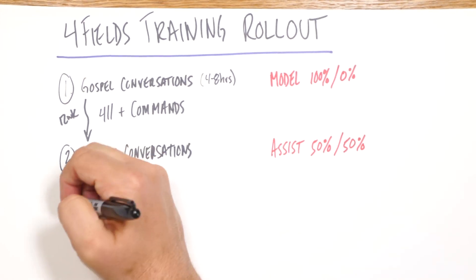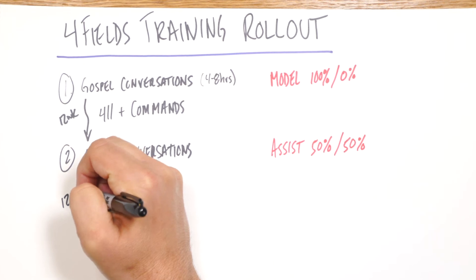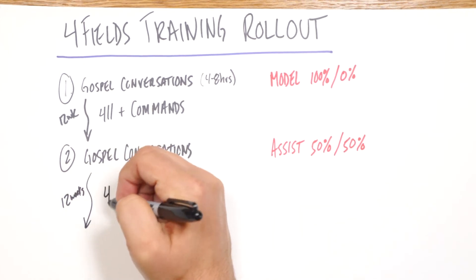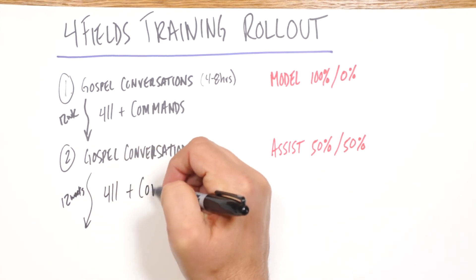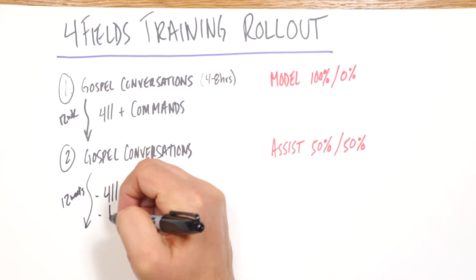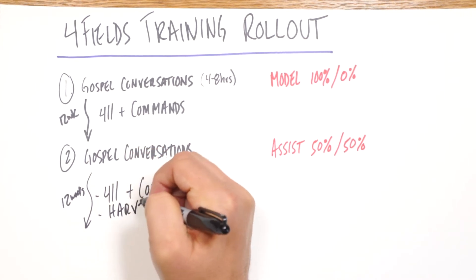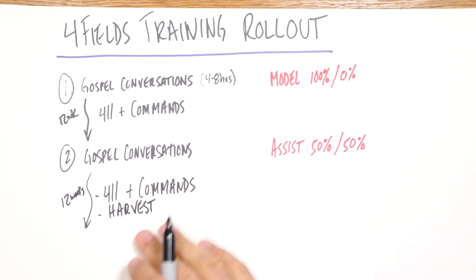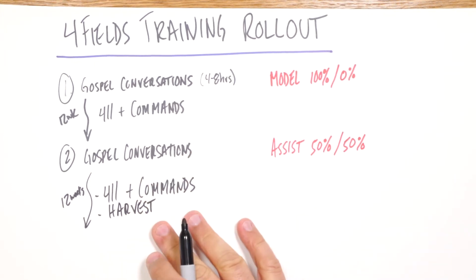Then we'll do another 12-week cycle where they're going through the 411 and the Commands of Christ. And we would highly recommend that by this point, they're also going out in the harvest on a weekly basis, just following that weekly rhythm of a team.